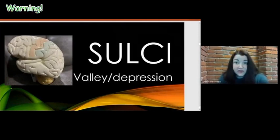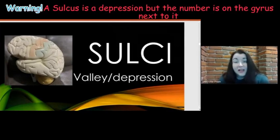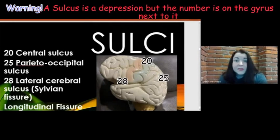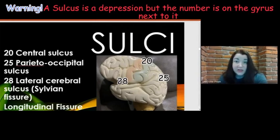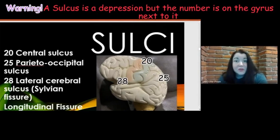On the exterior of the brain you'll find hills and valleys. A valley or depression is called a sulcus, or sulci in plural. At number 20 you have the central sulcus, which divides the frontal lobe from the parietal lobe. In front of it is the precentral gyrus and behind it is the postcentral gyrus. At number 25 is the parietal occipital sulcus, which separates the parietal lobe from the occipital lobe. At number 28 is the lateral cerebral sulcus, also known as the sylvian fissure, which separates the frontal, temporal, and parietal lobes.